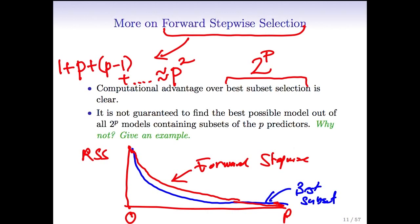This relates to the fact that forward stepwise isn't guaranteed to find the best possible model out of all 2 to the P models that best subset considers. The two curves have the same RSS at the null model and at the full model with all P predictors, but in between there's a gap. The reason is that best subset finds the best model with K predictors, but forward stepwise might not — because the best model containing K predictors might not be a superset of the best model containing K minus 1 predictors.